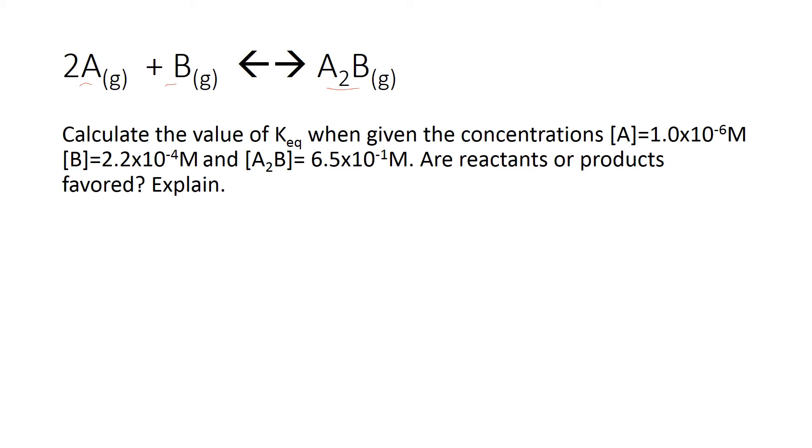Let's start by figuring out what the setup of our equation should be. So K equals the concentration of the products, which is A2B, over the concentration of the reactants. So A, and I have a coefficient here, so it'll be squared—2 is my coefficient—times B. Whenever there is no number in the coefficient, we just assume that's a 1. You don't have to write a 1.